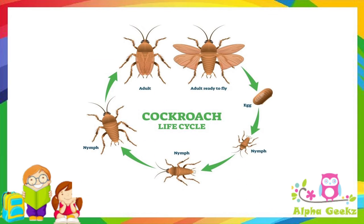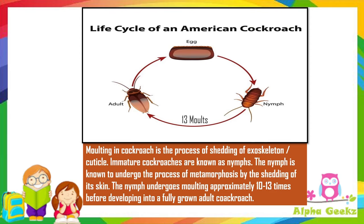Let's look at the life cycle of a cockroach. The female cockroach lays many eggs in a case. A baby cockroach that hatches out of the egg is called a nymph. The nymph looks like the adult except it is smaller and does not have wings. As it grows bigger, it sheds its old skin and gets a new one — this process is called molting. The nymph undergoes molting approximately 10 to 13 times before developing into a fully grown adult cockroach.